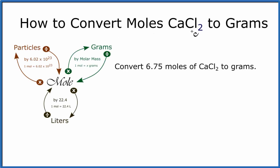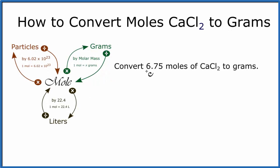To convert moles of CaCl2 to grams, that's calcium chloride, we'll use this map to guide our work. We have 6.75 moles of CaCl2, and we want grams. We start with moles and want to get to grams.